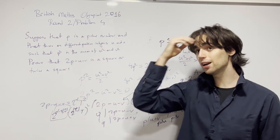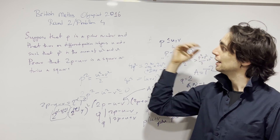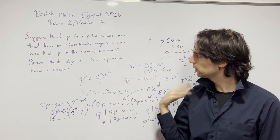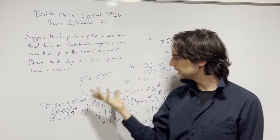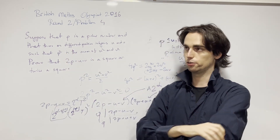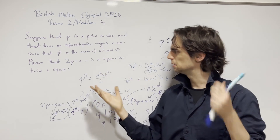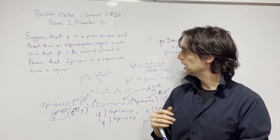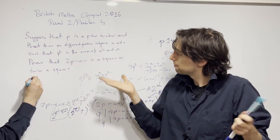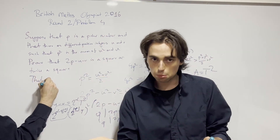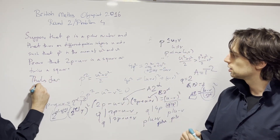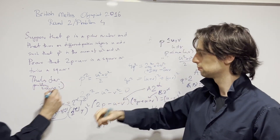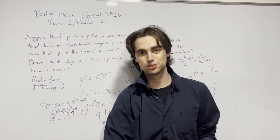That finishes Problem 4 from the British Math Olympiad Round Two. Generally these tests are nice — they're trying to get a few dozen people through to an IMO camp. It's a cute, nice little training problem. Thanks for problem solving!